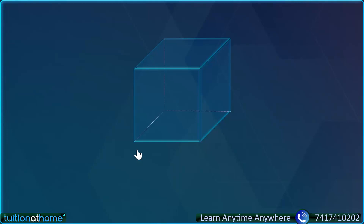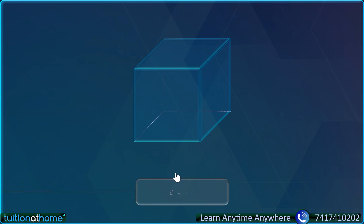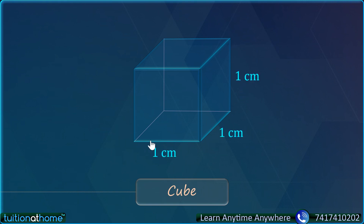Welcome all my students to our new session. Students, what you can see here? This is a cube. Suppose we take its length, breadth and height as 1 cm each. This is 1 cm, this is 1 cm and this is 1 cm.